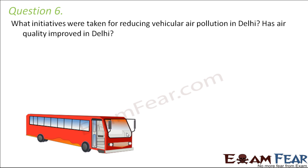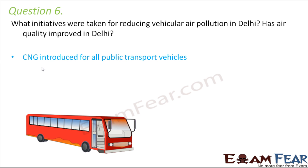Question number 6: What initiatives were taken for reducing vehicular air pollution in Delhi? Has air quality improved in Delhi? Several steps were taken because pollution had increased too much, and people started suffering from breathing problems. CNG was introduced for all public transport vehicles around 2002. It was made a rule that all public transport vehicles including buses and autos needed to be converted from petrol or diesel to CNG.